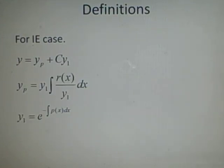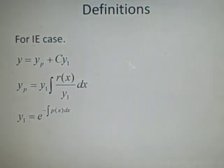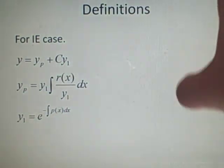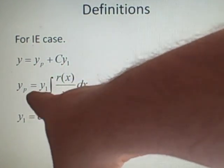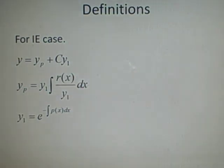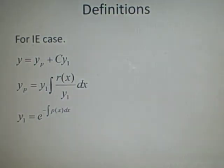Right now, now we have the inhomogeneous equations, so IE. This is, the general solution when you have inhomogeneous equations is equal to y equals yp. So, that's our particular solution, so using our rx. So, we have, and this is equal to y1 integral rx over y1 dx, plus our c, just a constant, y1.